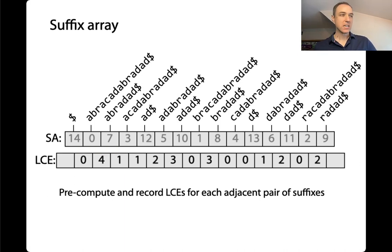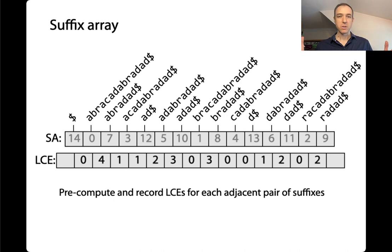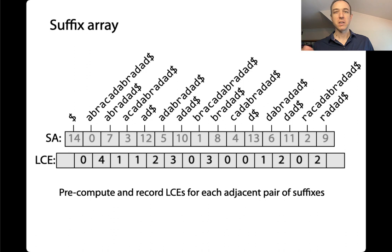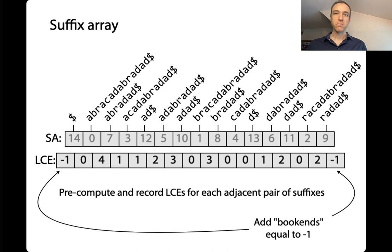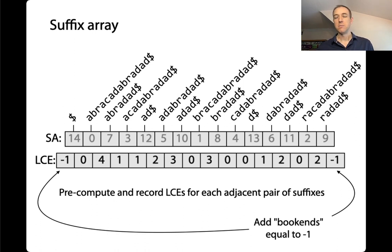One more thing about this LCE array: we're going to give it bookend elements on either extreme. There are no two adjacent suffixes to compare at those extremes, so we give them a default placeholder value of negative one. That's going to be useful when we write down definitions of what we're looking for. We now have a pre-computed LCE array parallel to the suffix array.